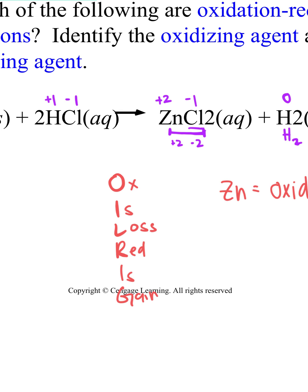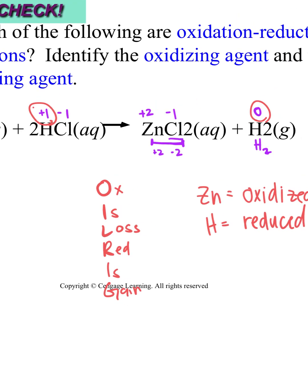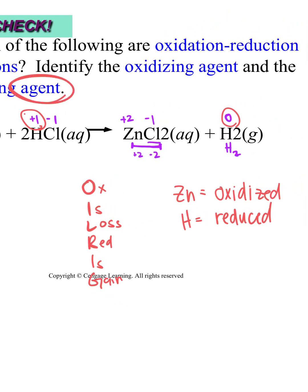And so what's the other element that changed? Hydrogen went from plus one to zero. So hydrogen was reduced. It became more negative, right? It gained electrons. So now it asked us for the agents. So that means if this was oxidized, this is the reducing agent. And this was the oxidizing agent. So this really is our answer here. Hydrogen is the oxidizing agent. Zinc is the reducing agent. It caused the other one to be reduced, right? Or vice versa.